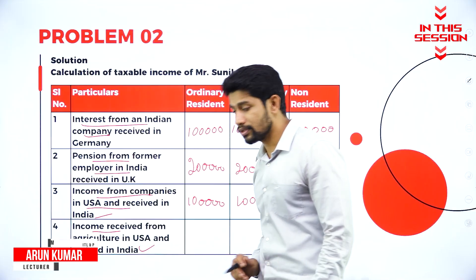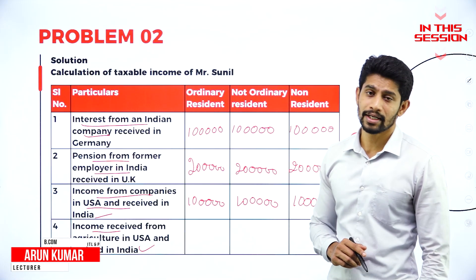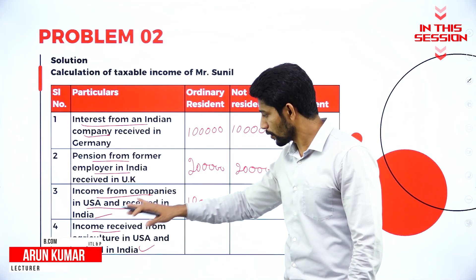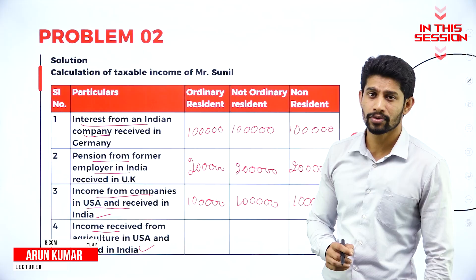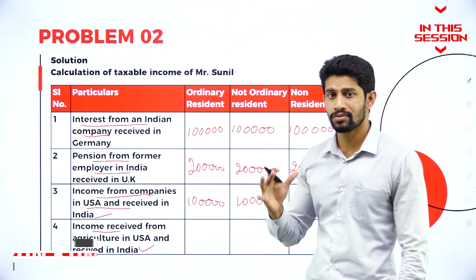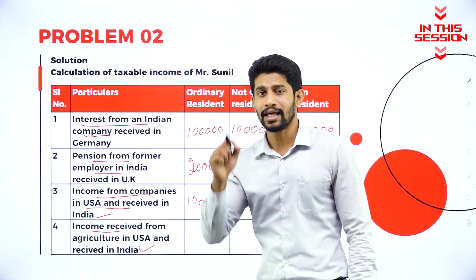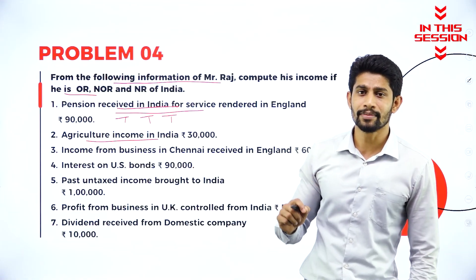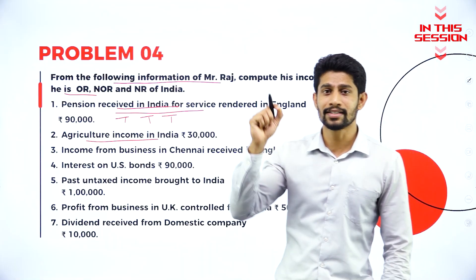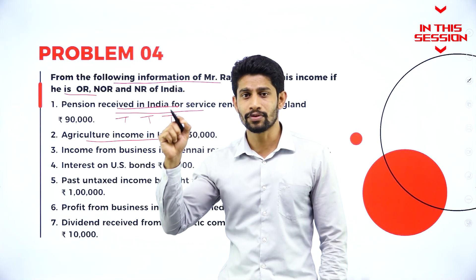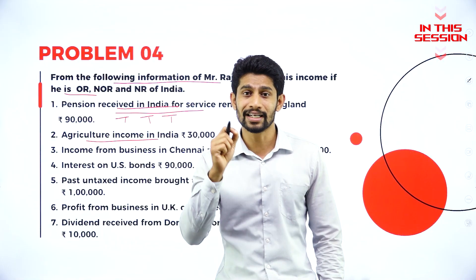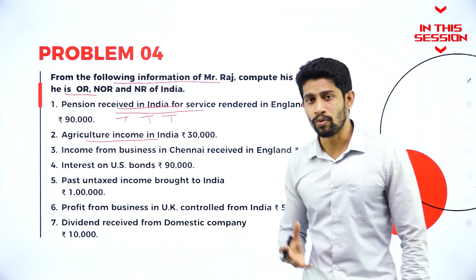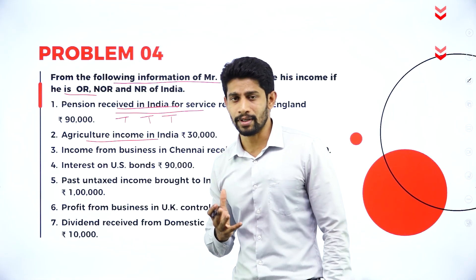Received in India — if you just look into this word 'received in India,' you have to assume that it is taxable in all three columns. Agriculture income is exempted under section 10(1) of the Income Tax Act 1961, in order to motivate the farmers.